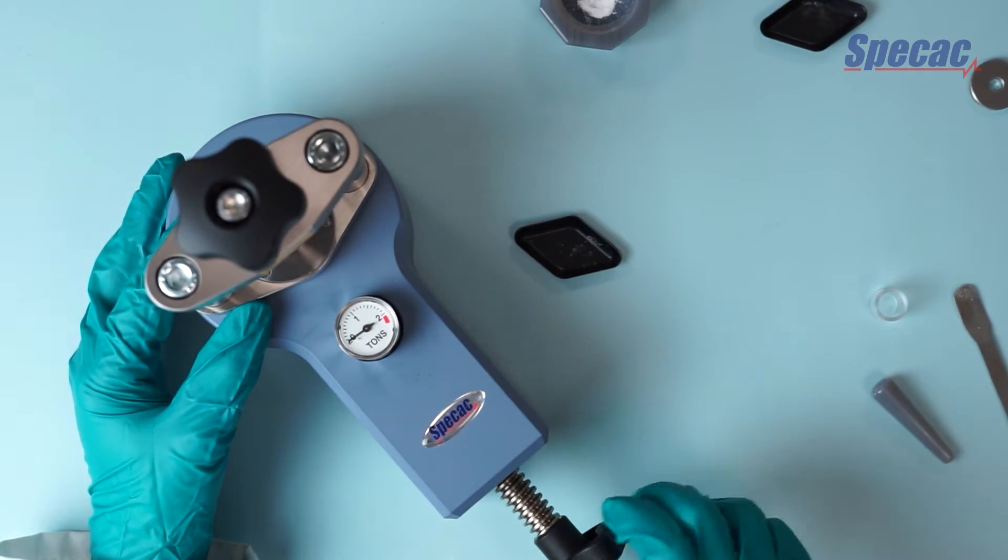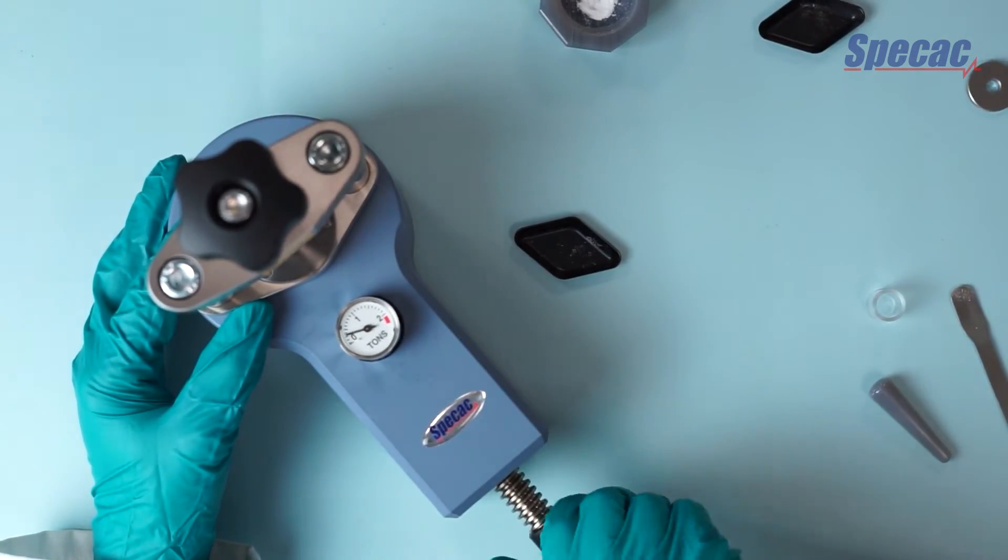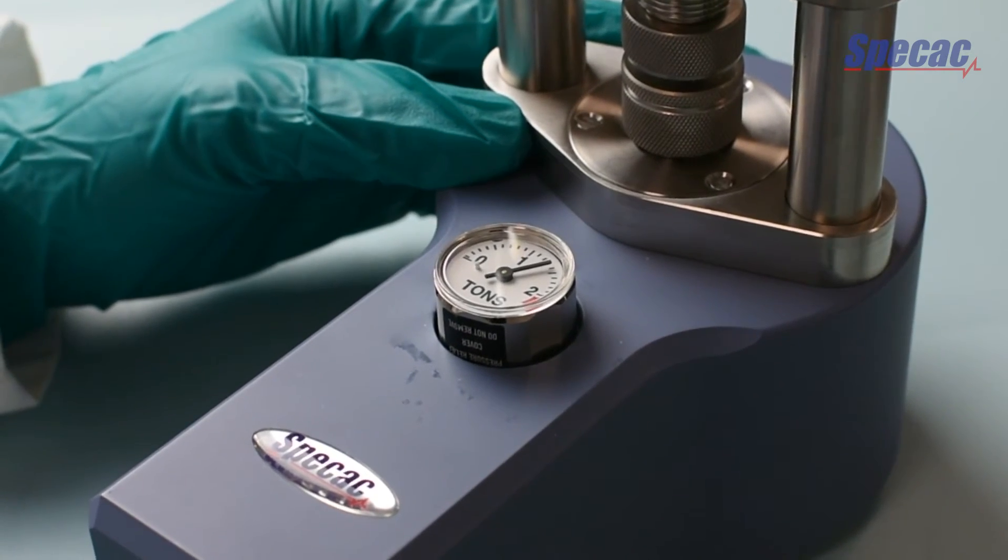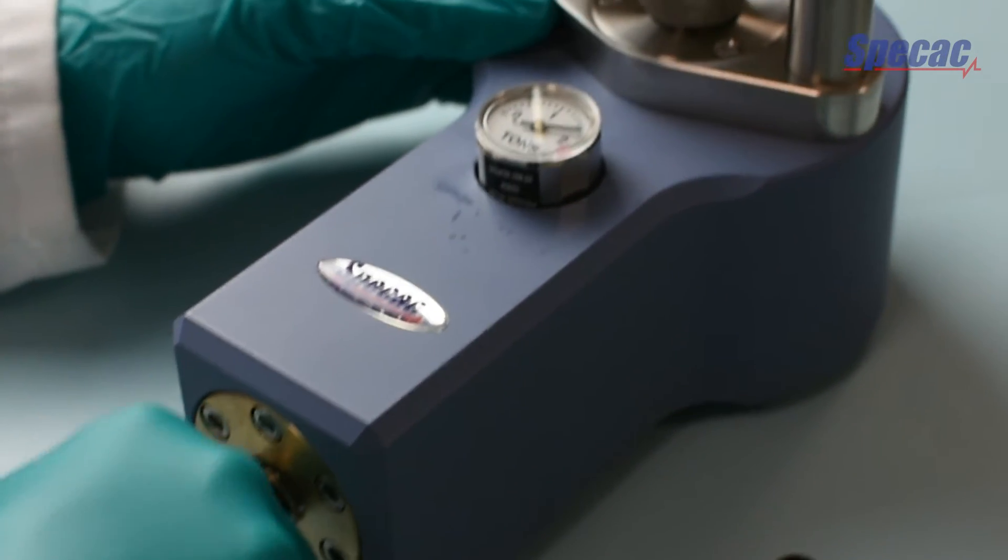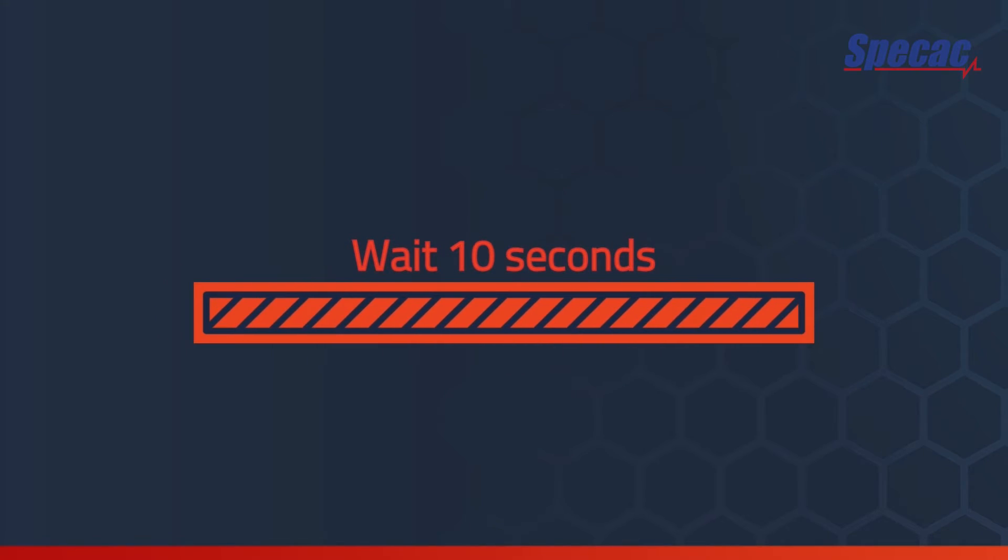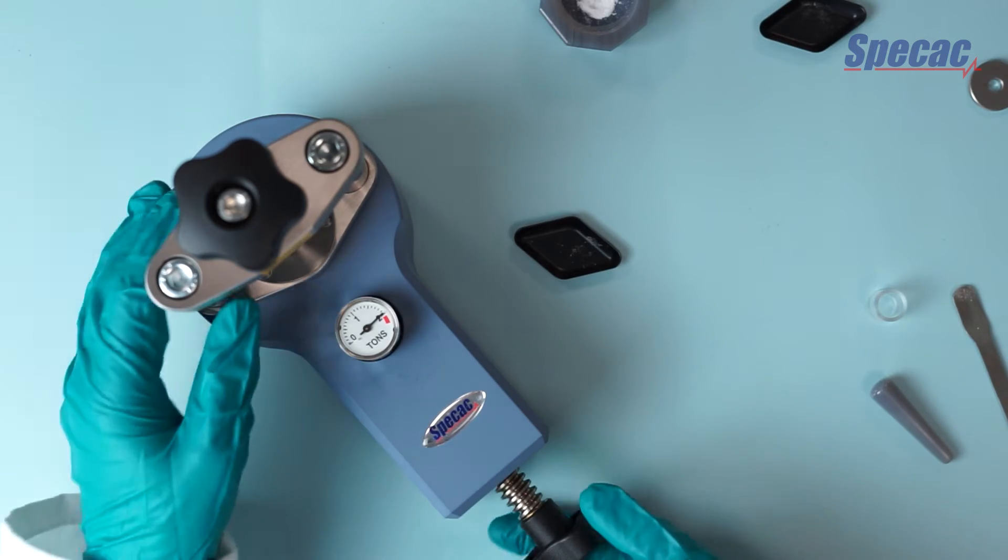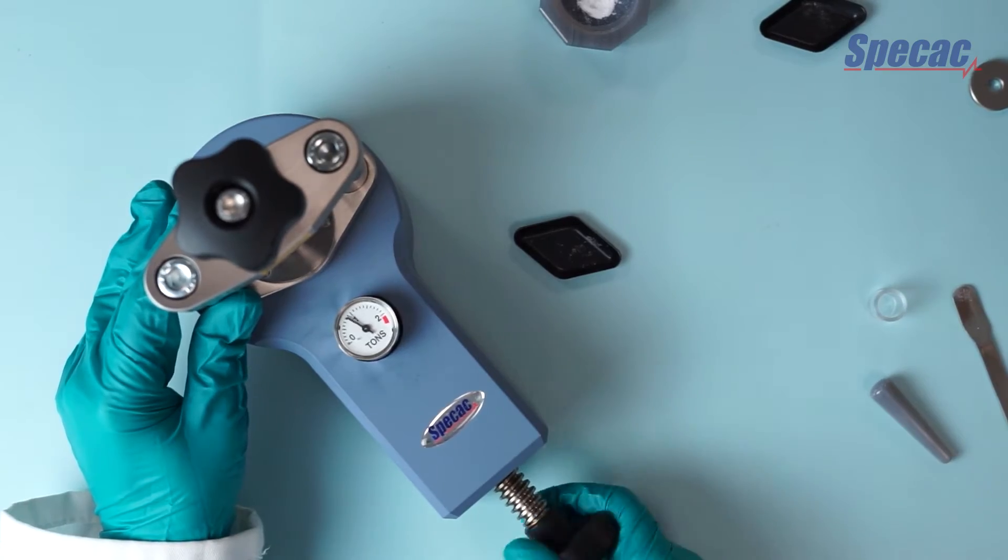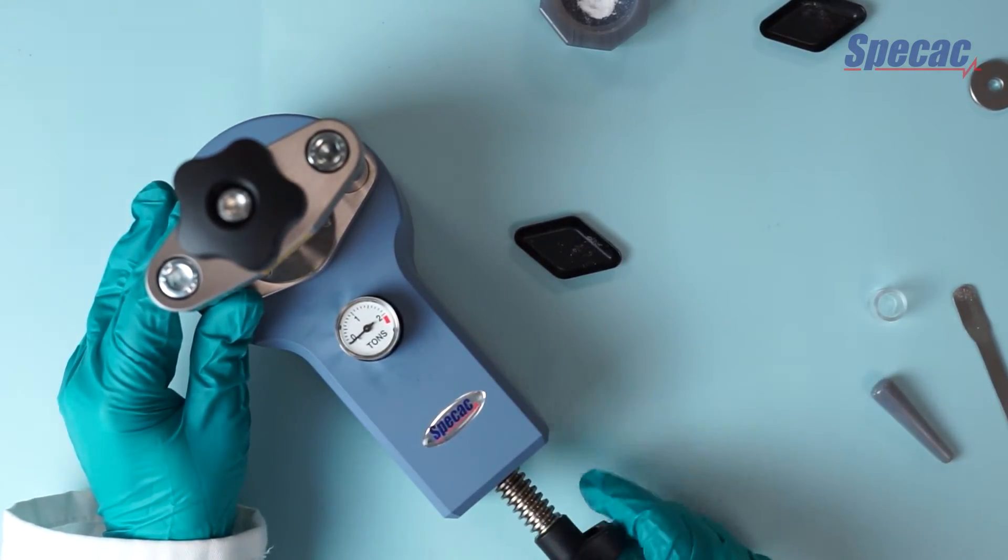Then we use the screw on the front to apply a load of two tonnes, rotating the screw clockwise to increase the load. And then we wait a few seconds. When we're ready we can relax the load by turning the handle counterclockwise. The load comes back down to zero.